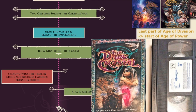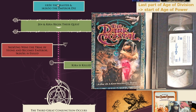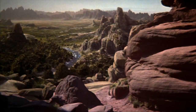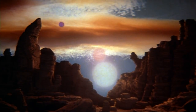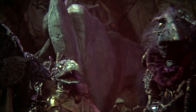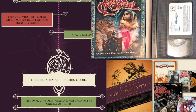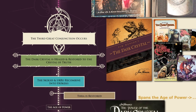Now in our timeline we're getting to the end of the Age of Division, where Ursu the Master and Skekso the Emperor die — that's how the movie begins. The Dark Crystal, the 93-minute movie from 1982, is the nexus where all the other stories are built around. Big events: Jen and Kira begin their quest, a new emperor, Kira is killed at the end, and the third great conjunction occurs, the Dark Crystal is healed, the Skeksis and Urru recombine into the Urskeks, they leave, and Thra is restored — Kira is revived.